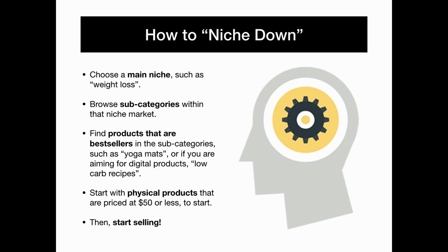Find products that are best sellers in the subcategories — such as yoga mats, or if you're aiming for digital products, a weight loss category would be low carb recipes. If you are starting with physical products, try to promote those that are priced at $50 or less to start.